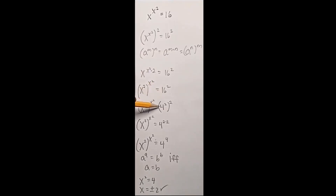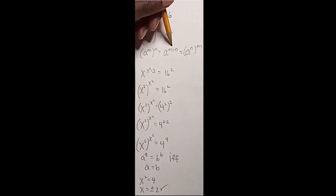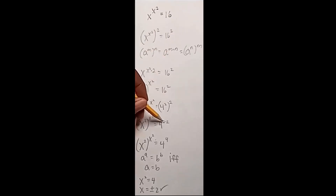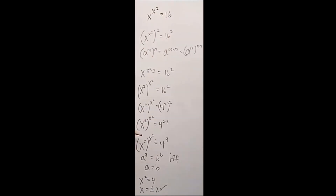16 squared is 4 squared squared. So by rule, I can go from here to here — giving it parentheses, I'm going to have 4 to the 2 times 2. So once again we use this rule to go from here to here. So we have 4 to the 4 equals x squared to the x squared.